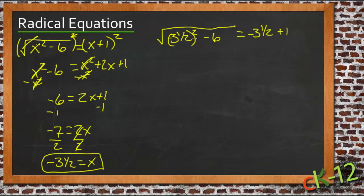Negative 3 and a half squared is 12 and a quarter, so we have square root of 12 and a quarter minus 6 equals negative 3 and a half plus 1, which is negative 2 and a half.